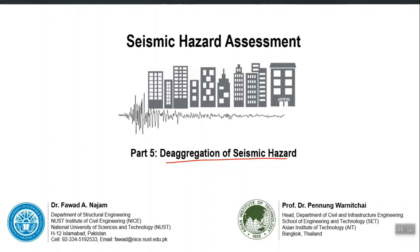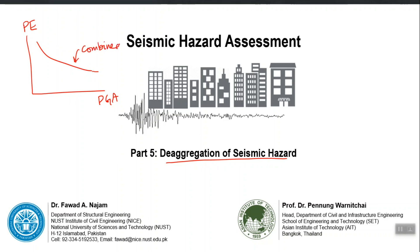Let us say that I have 5 faults — one is a normal fault, one is a strike-slip, and these 5 faults contribute to the hazard at my site. As a result of PSHA, I get the hazard curve: probability of exceedance in some years versus, let us say, PGA. But this is a combined hazard curve from all 5 sources — you have seen that we add their exceedance rates.